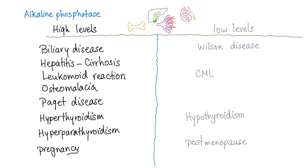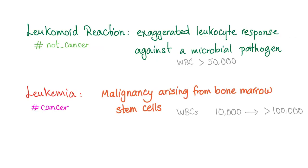From the previous video, you know that high levels of alkaline phosphatase are seen in leukomoid reaction, but low levels of alkaline phosphatase are seen in chronic myeloid leukemia. We will discuss leukomoid reaction in a future video, but for now, please know that leukomoid reaction is an exaggerated leukocyte response against a microbial pathogen.